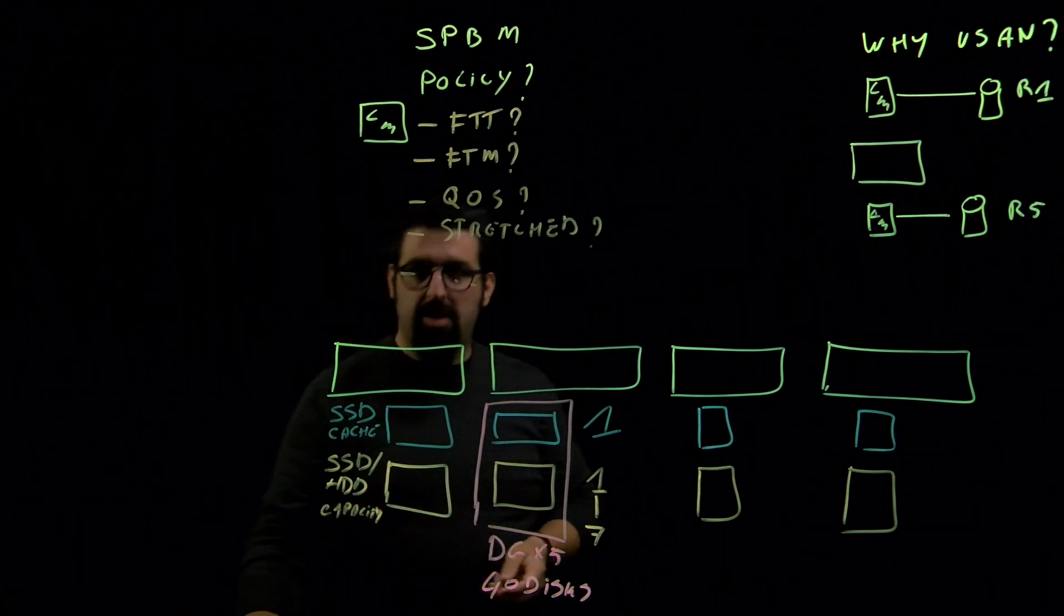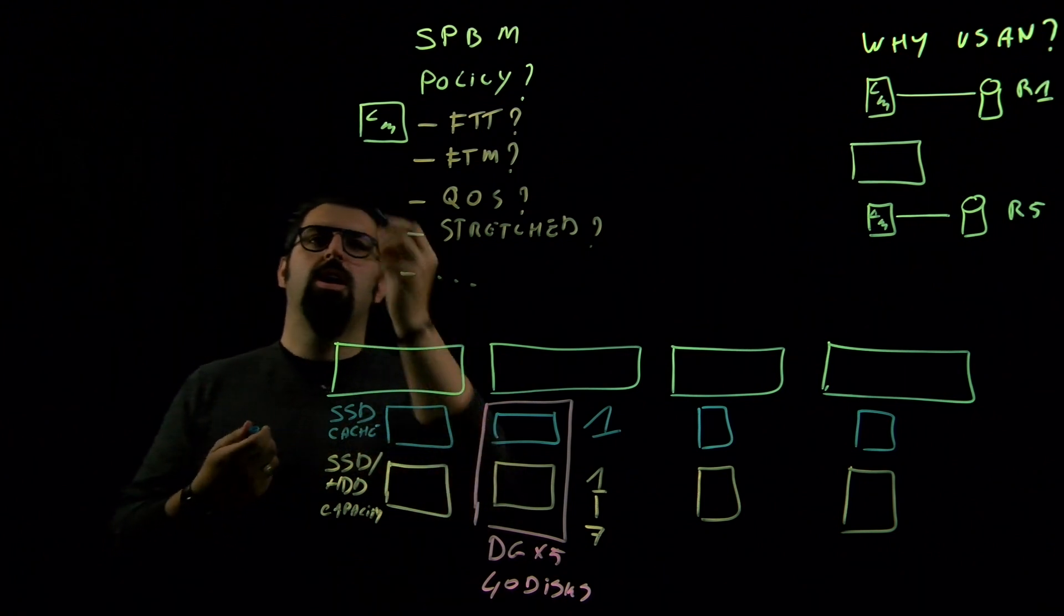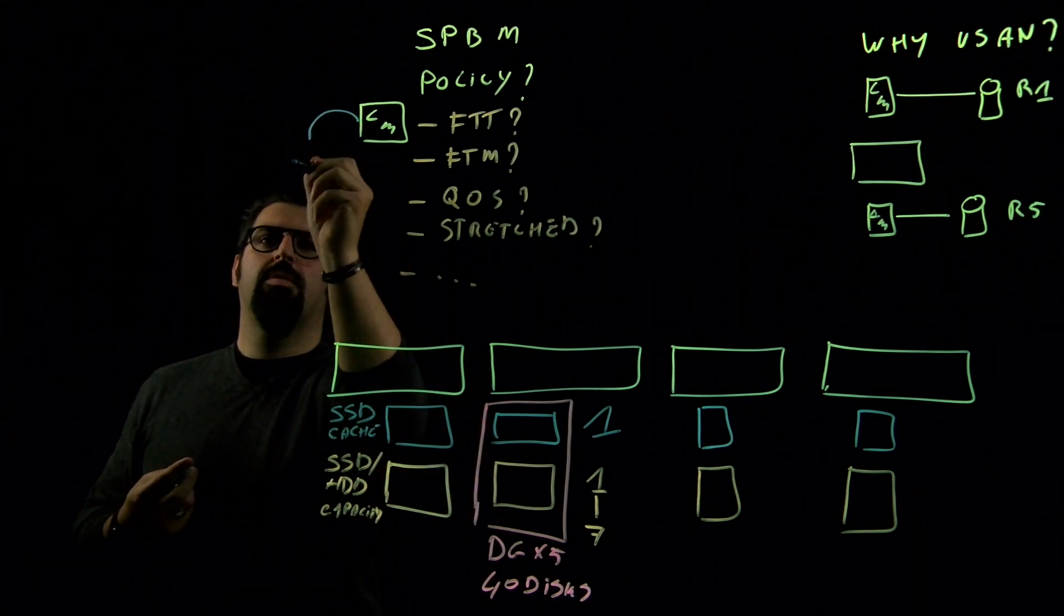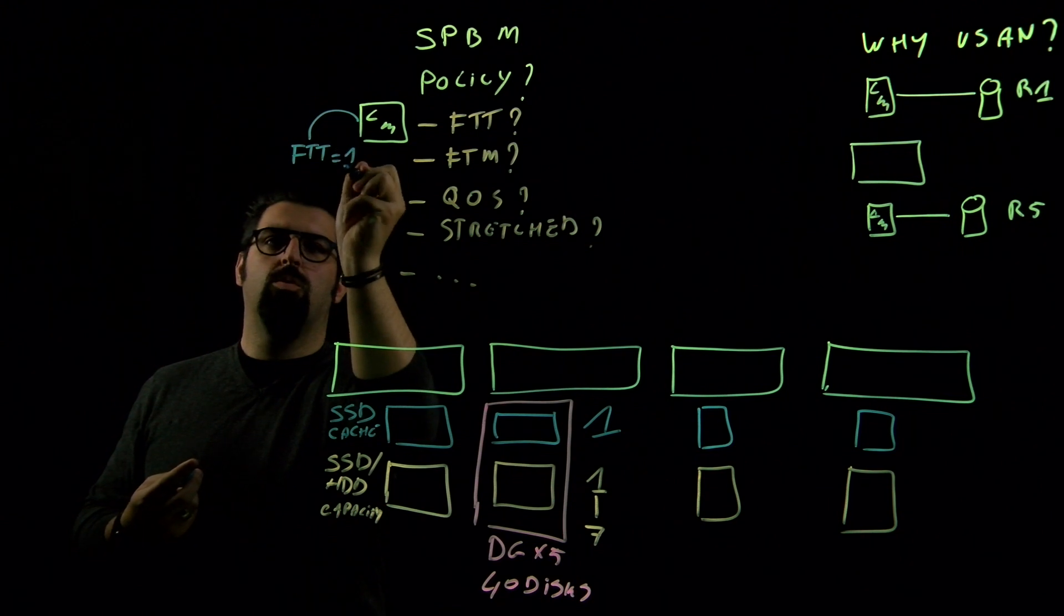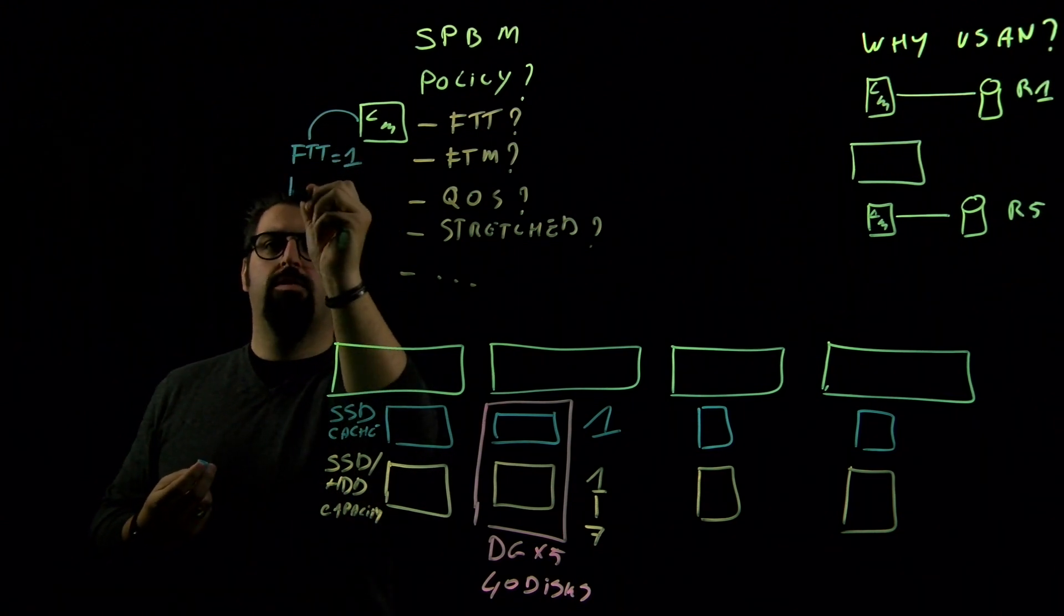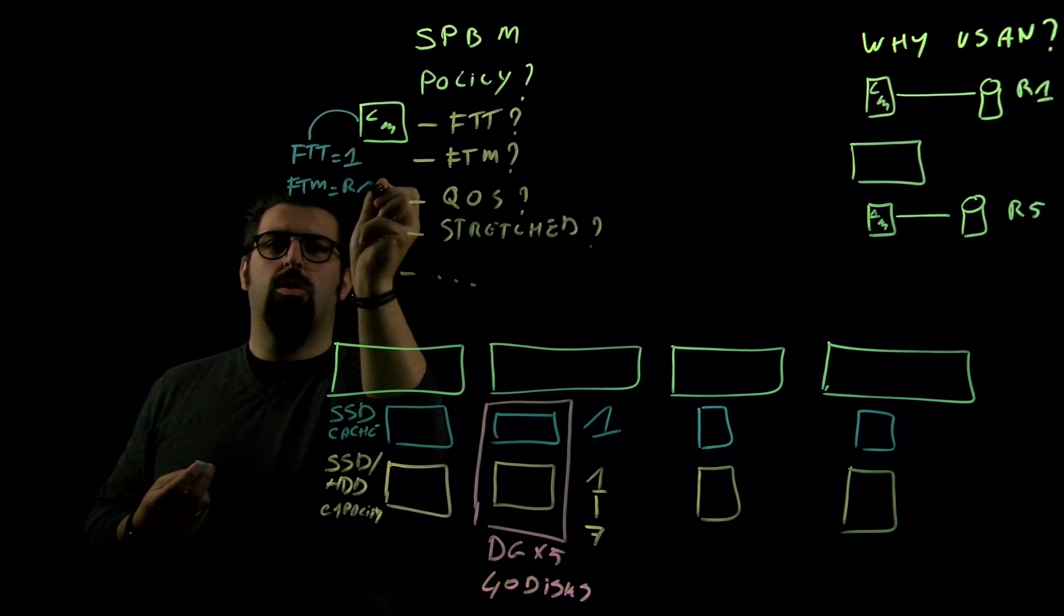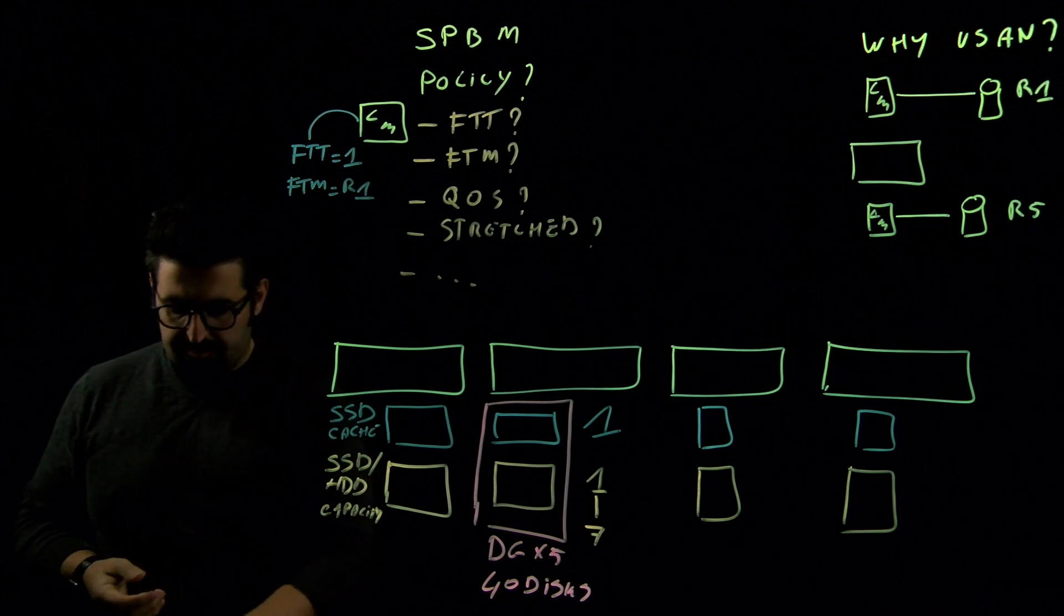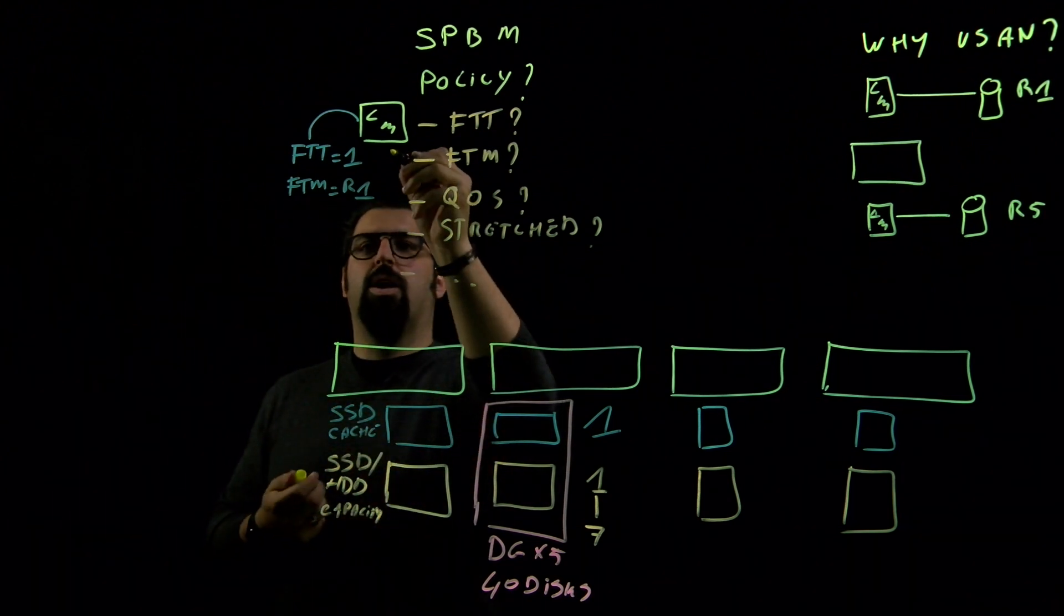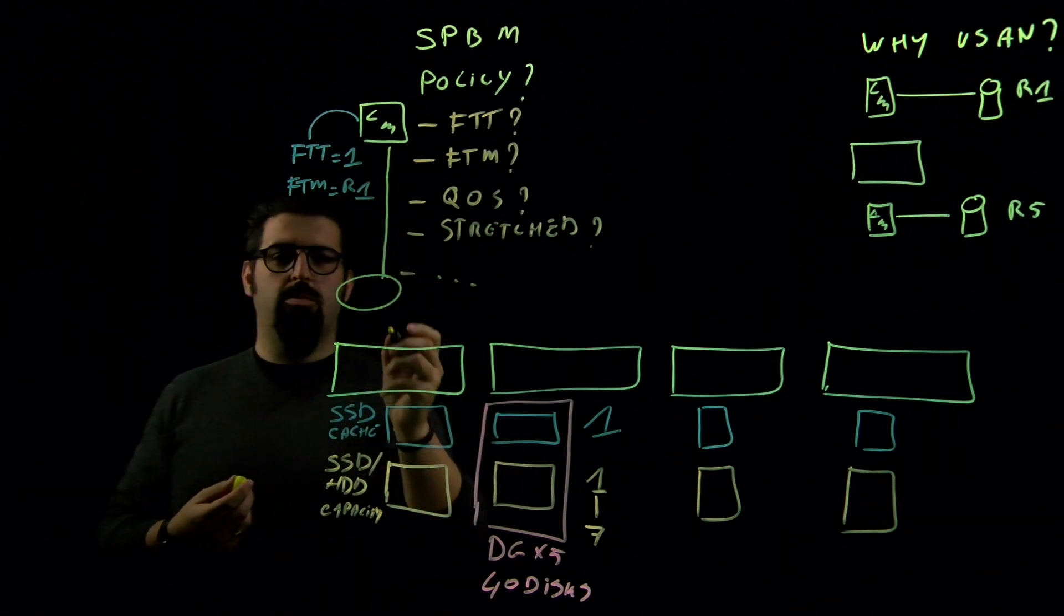Let's create a policy for this VM. I would like to create a policy with FTT equals 1, and I would like to do it with a method equals RAID 1, which means that in essence this VM now becomes an object.